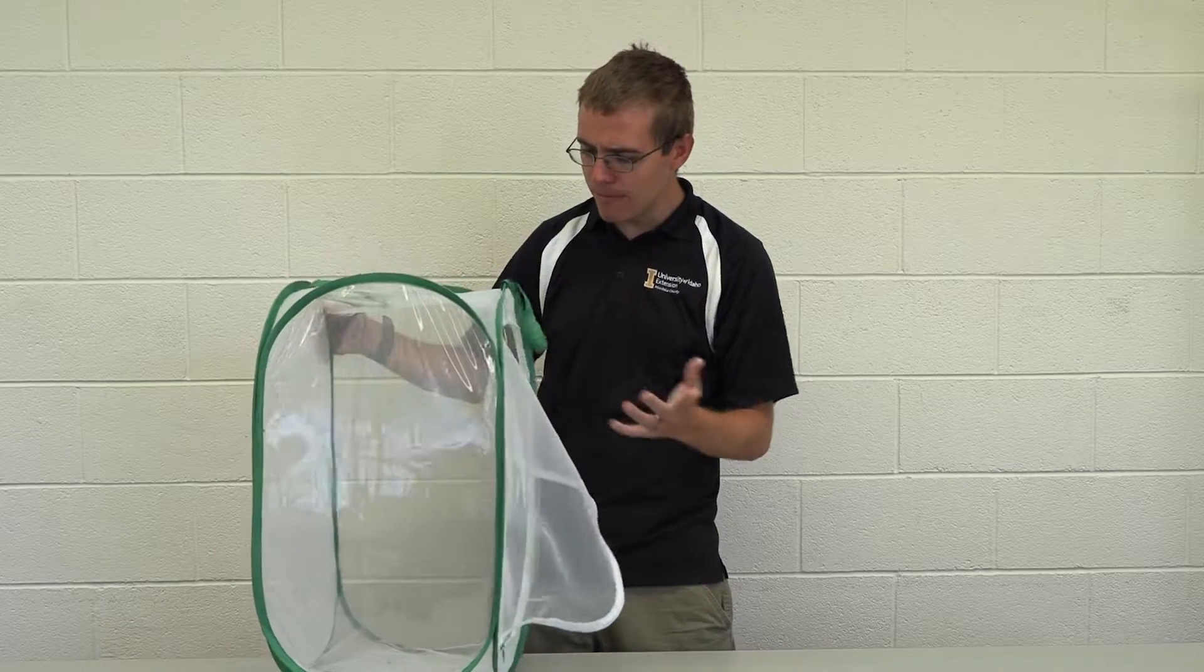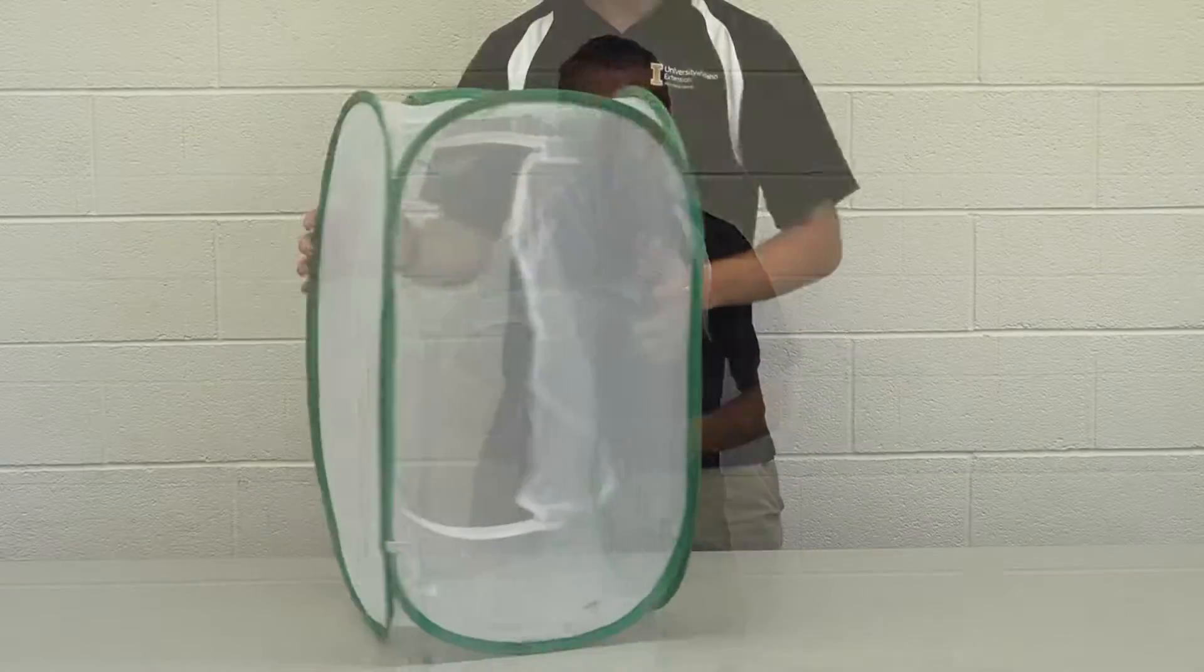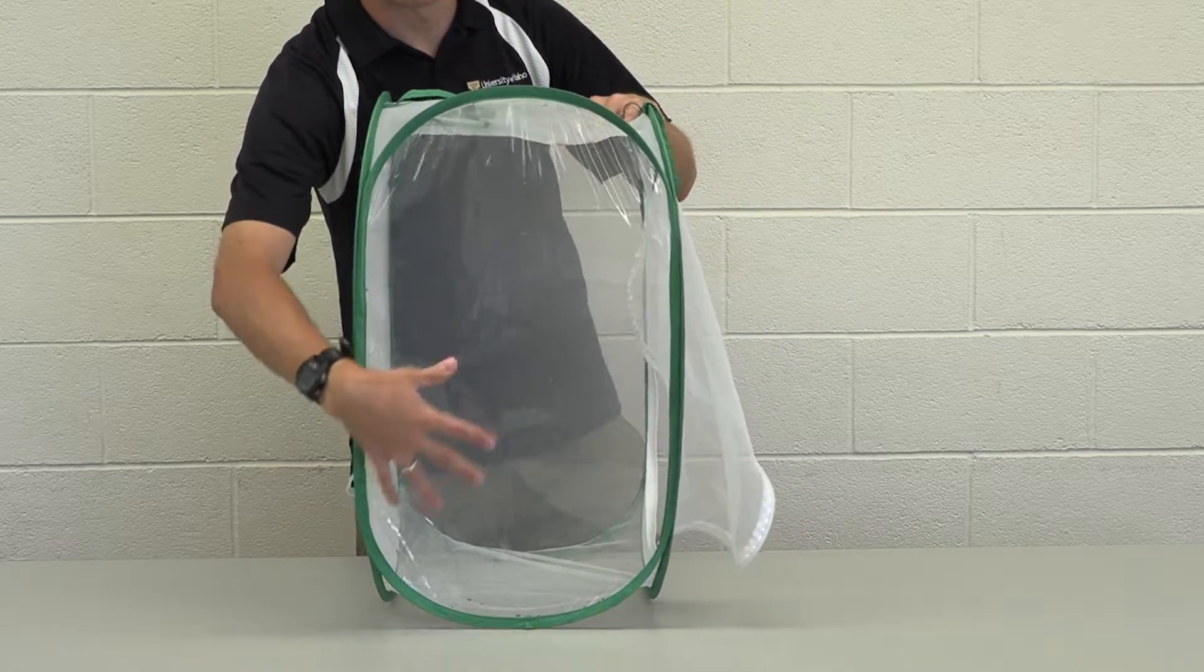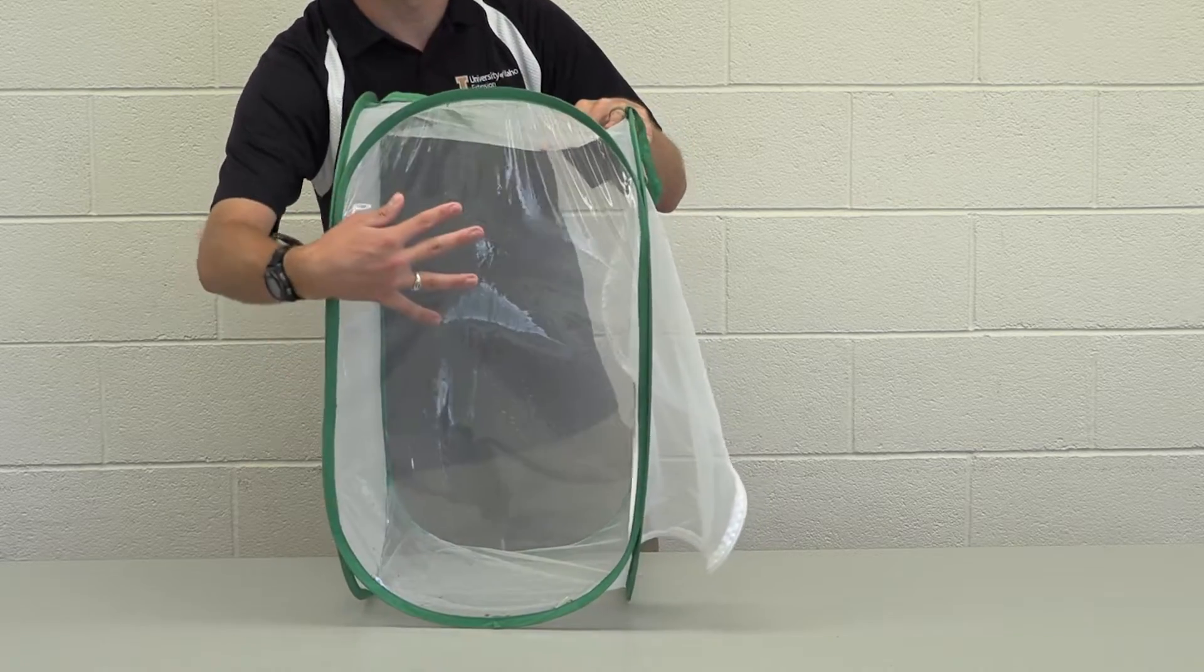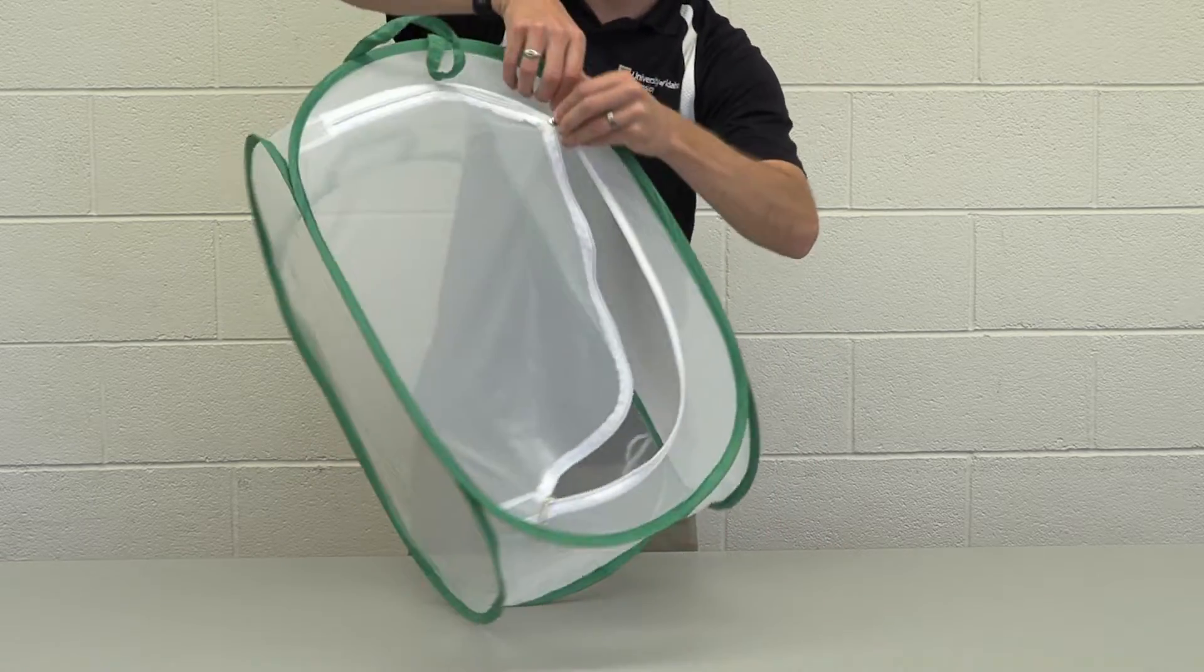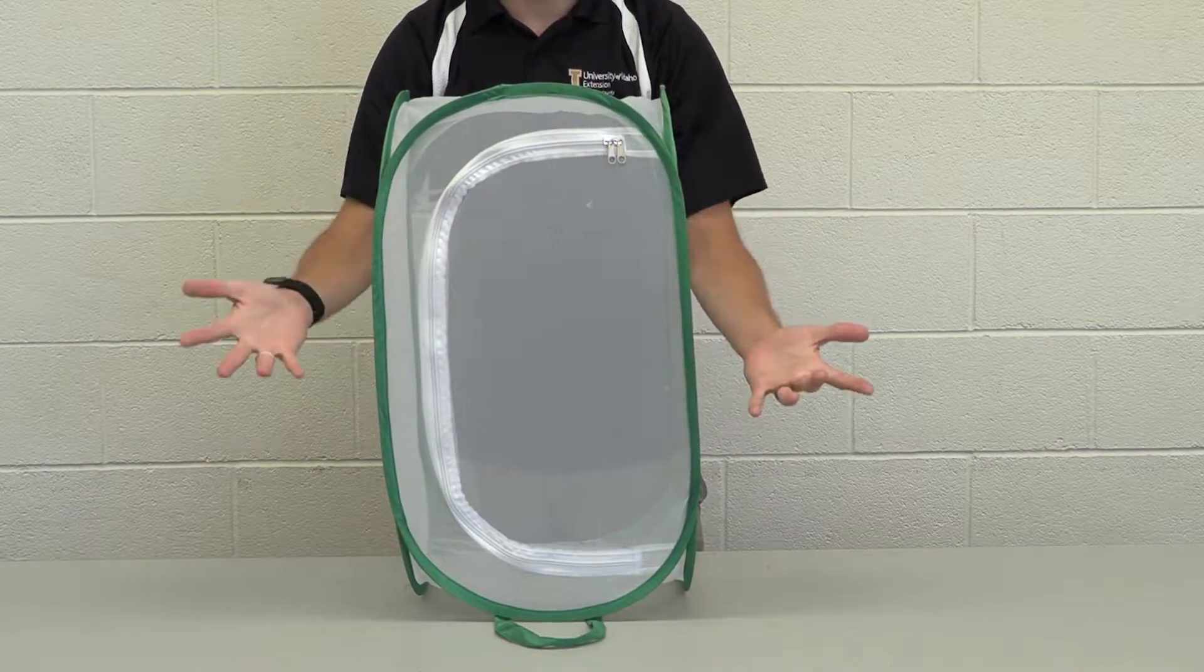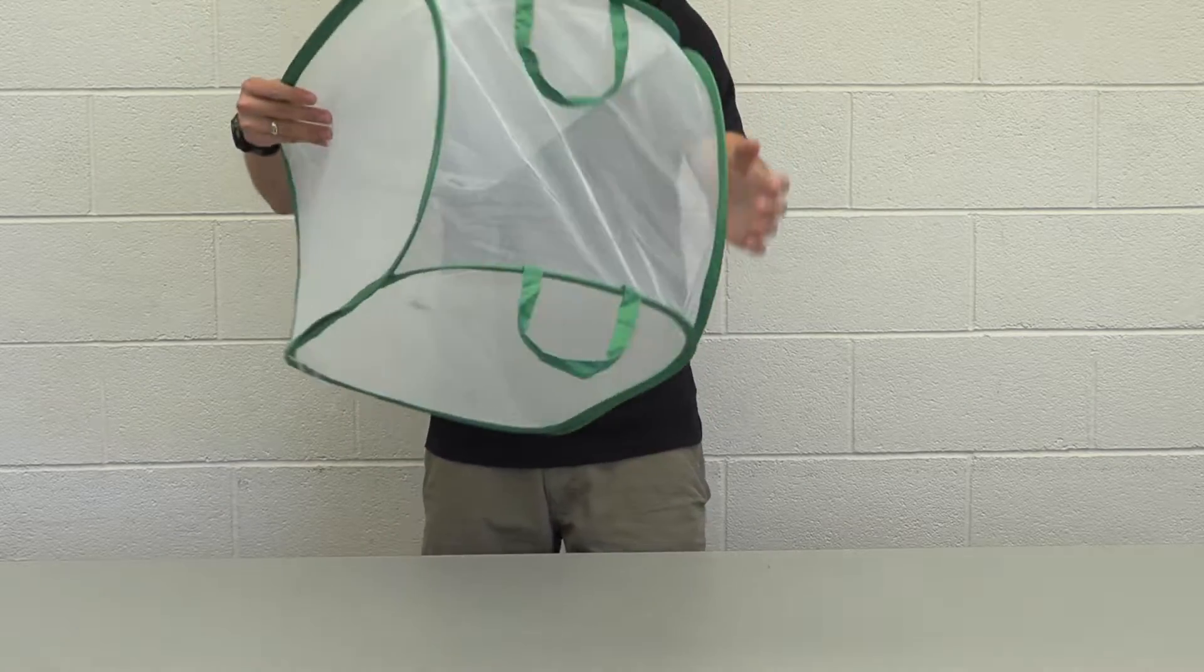This is a pop-up rearing and observation cage. It has four different sides. This side here has a plastic-type feeling, like something you'd find on a tent window. It's got mosquito mesh on these sides. This side has a zipper opening so you can put insects in and out. It also has mosquito mesh on the top and bottom.